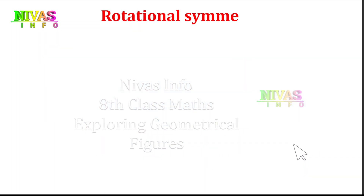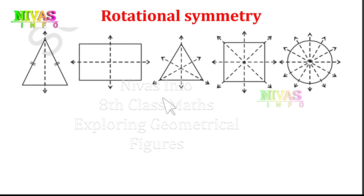Now we will look at rotational symmetry. Here we have an isosceles triangle. This rotation involves a rotation by an angle. A basic image is the starting position of the shape in rotational symmetry.